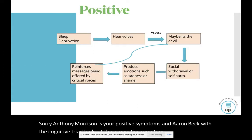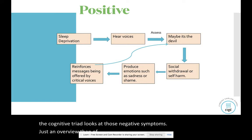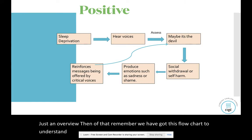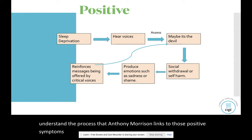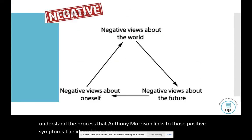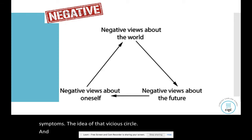So much like the biological approach, the cognitive approach is good because it explains both the positive and negative symptoms of schizophrenia. Anthony Morrison covers positive symptoms, and Aaron Beck's cognitive triad looks at those negative symptoms.